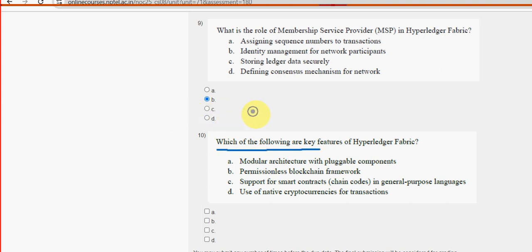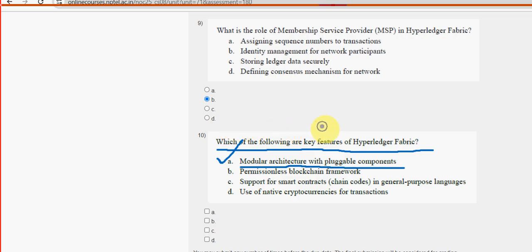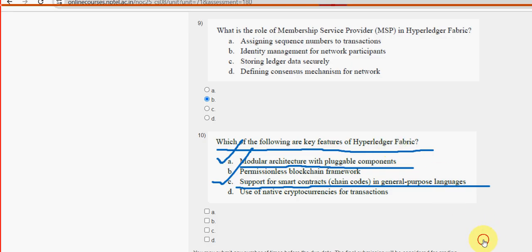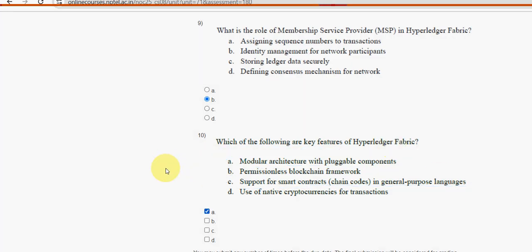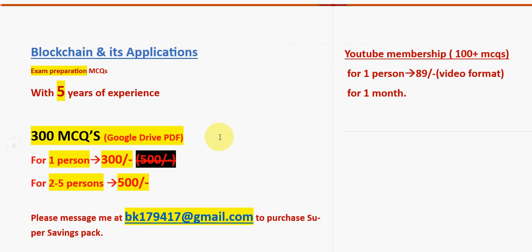Question ten — the final question: which of the following are key features of Hyperledger Fabric? Two probable solutions — option A, 'modular architecture with pluggable components,' and option C, 'support for smart contracts and chaincode in general-purpose languages.' Mark option A and C as probable solutions for question ten.